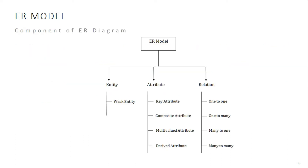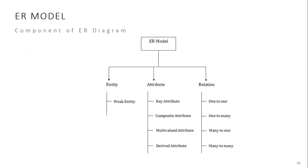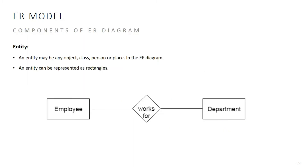The ER model components include: entities — strong entity and weak entity; attributes — key attributes, composite attributes, multi-value attributes, and derived attributes; and relationships — one-to-one, one-to-many, many-to-one, and many-to-many.